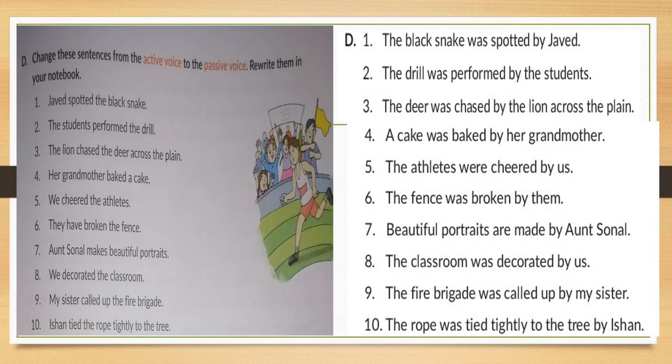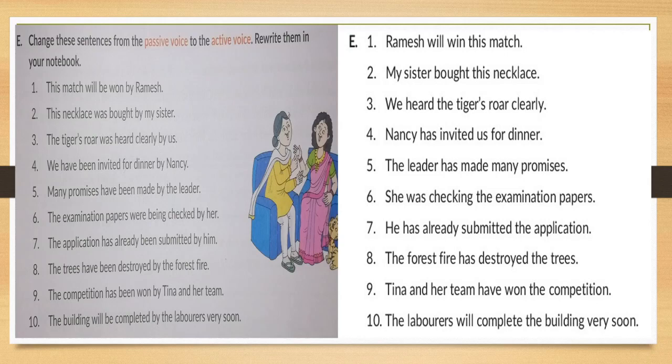Yes, this is your next part — e-part. Change these sentences from the passive voice to the active voice. Rewrite them in your notebook. Sentences are given in the passive voice and you have to convert them into the active voice. 'This match will be won by Ramesh' — so 'Ramesh will win this match.' It's future simple, so the tense stays future simple. The V3rd changes back to V1: 'will win.'